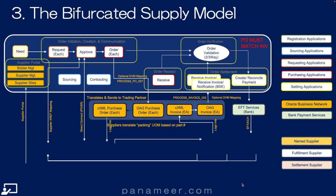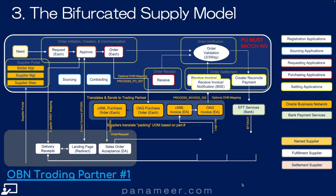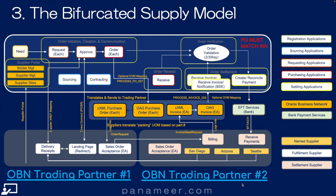Slide three gets into the bifurcated supply model. This is a diagram of what the buyer-supplier model looks like when two different OBN trading partners are required to enable one supplier. One trading partner receives the sales order and often houses the web store, then passes that order over to the other trading partner — which is often the real supplier — and they issue the invoice back. This setup happens when a real-world supplier uses a third-party provider. For example, Bridgestone, the tire company, uses a third-party supplier called PunchOut2Go to enable a punch-out site or commerce web store for customer requests. If this makes no sense to you, no problem — reach out to me directly and I'll walk you through the process.